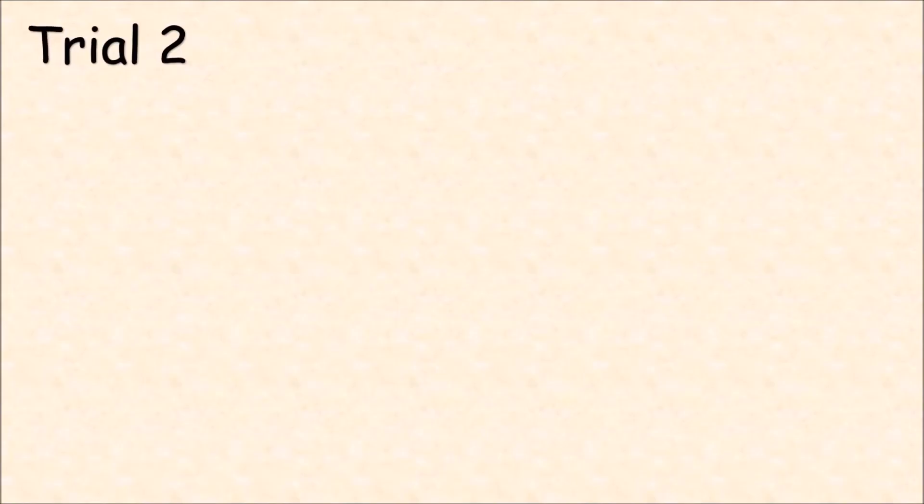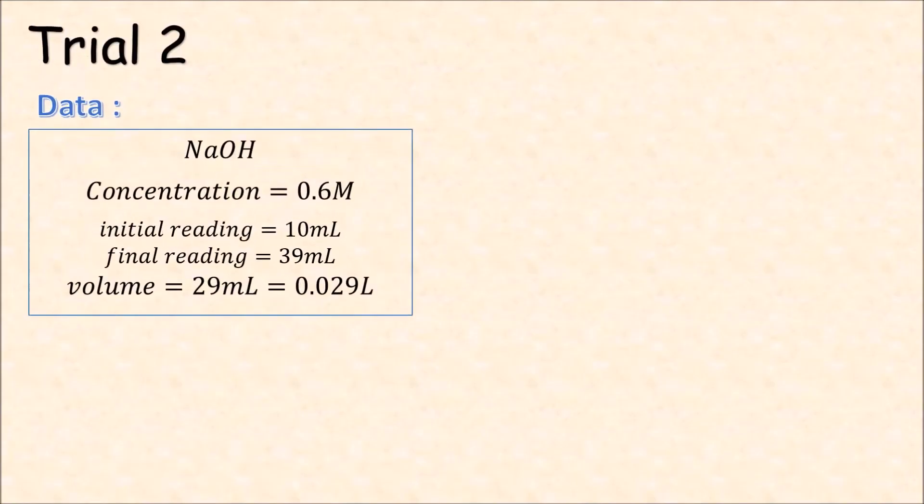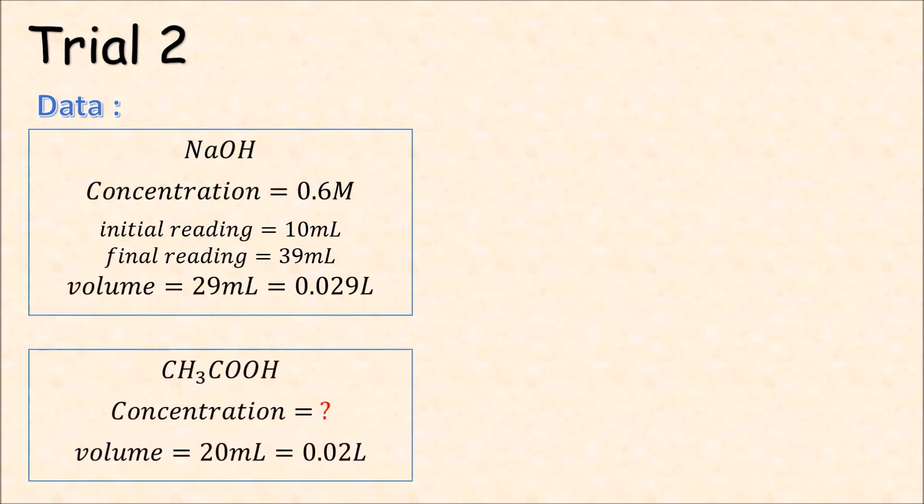For trial 2, we will do the same computation. The NaOH has a value of 29 ml. Same value of the volume for acetic acid.